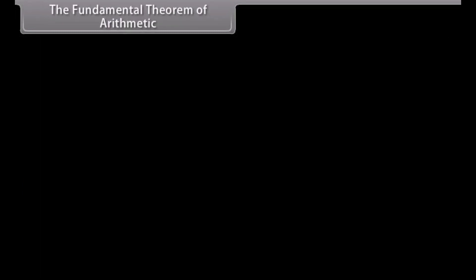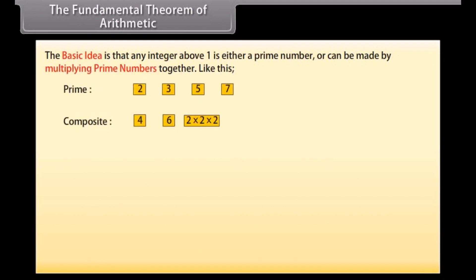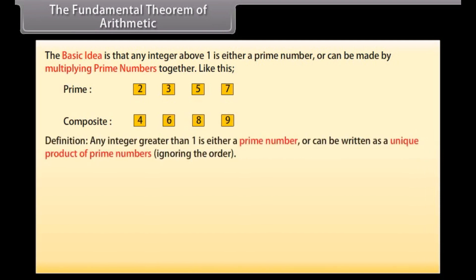The Fundamental Theorem of Arithmetic. The basic idea is that any integer above 1 is either a prime number, or can be made by multiplying prime numbers together. Any integer greater than 1 is either a prime number or can be written as a unique product of prime numbers, ignoring the order.